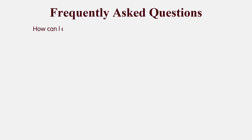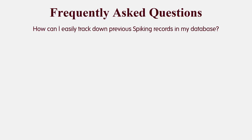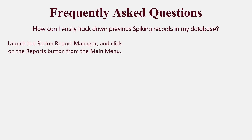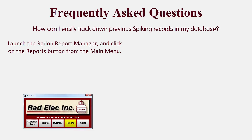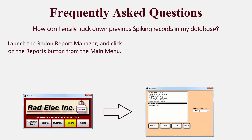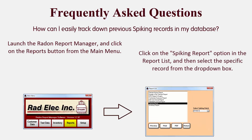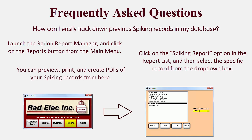How can I easily track down previous spiking records in my database? In order to find all completed spiking records in the Radon Report Manager, launch the software and click on the Reports button from the main menu. Click on the Spiking Report option in the report list, and then select the specific record from the drop-down box in the right portion of the window. You can preview, print, and create PDFs of your spiking records from here. Note that this is only for tracking down completed spiking records — you are not able to load the record for editing purposes from this reports window.